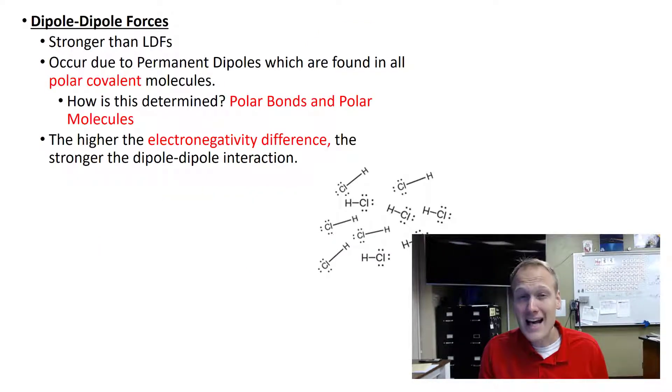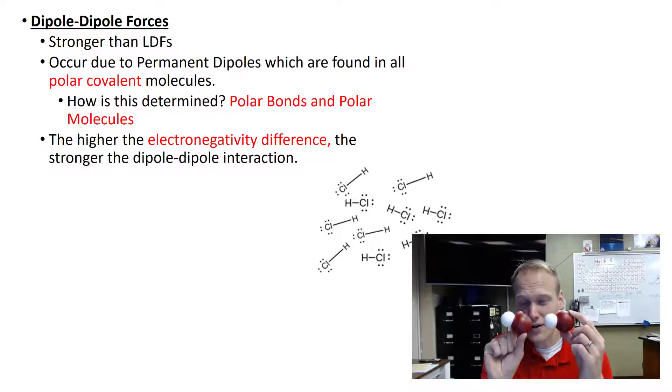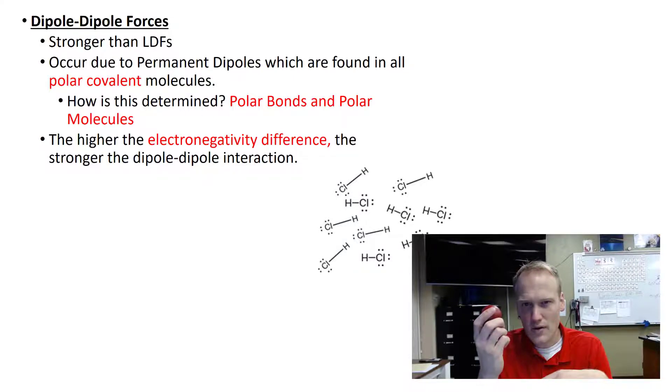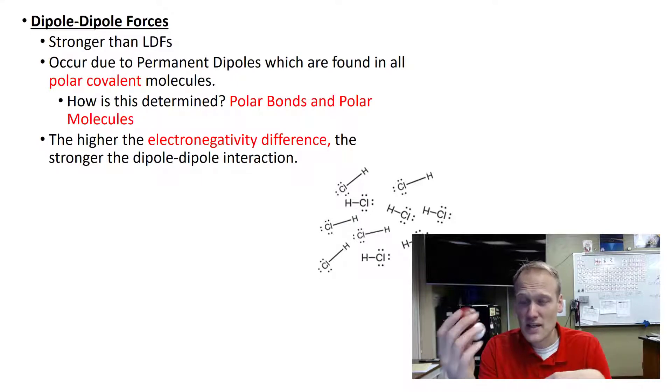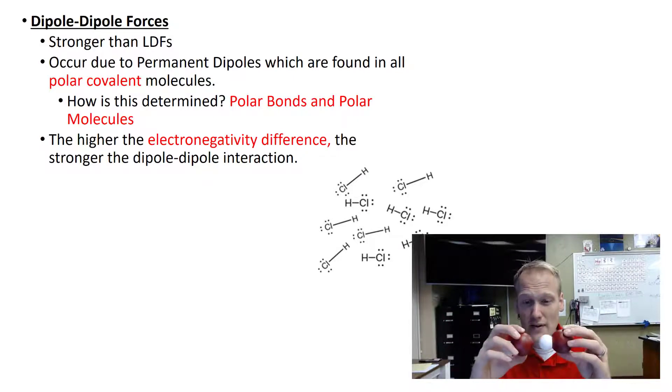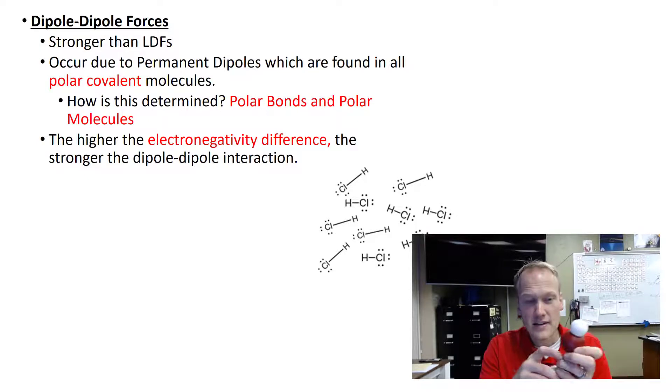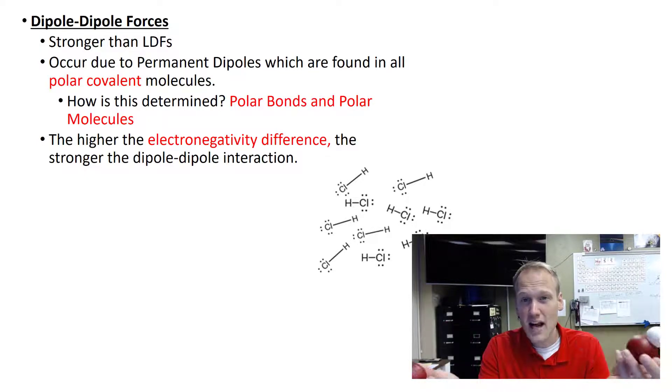The next type of intermolecular force is called a dipole-dipole force. This is when we have molecules that have polar bonds and polar molecules. So HCl is a good example here. We have chlorine and hydrogen. The chlorine is more electronegative, and it's going to pull more electrons toward itself. Because of that, there's a negative and positive end. And so, if there's another chlorine around, the negative end of one chlorine is going to attract to the positive end of the next, creating a dipole-dipole force. The greater the electronegativity difference within the molecule, the stronger the dipole-dipole, and the greater the intermolecular force with the next molecule. They will always arrange positive to negative because opposites attract.